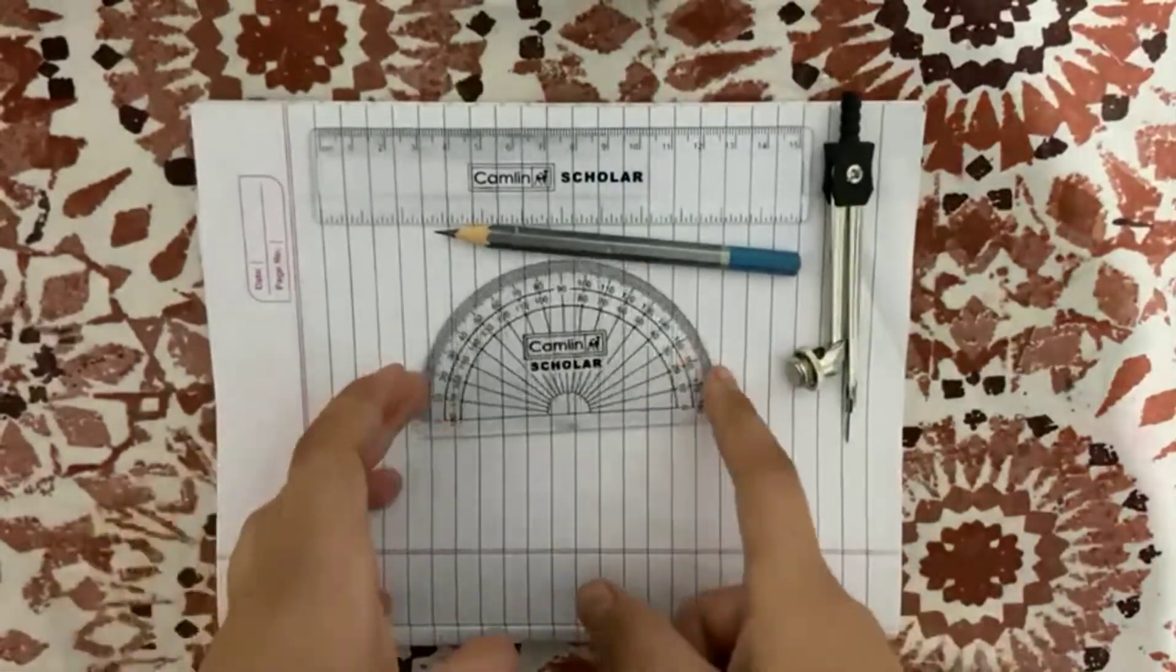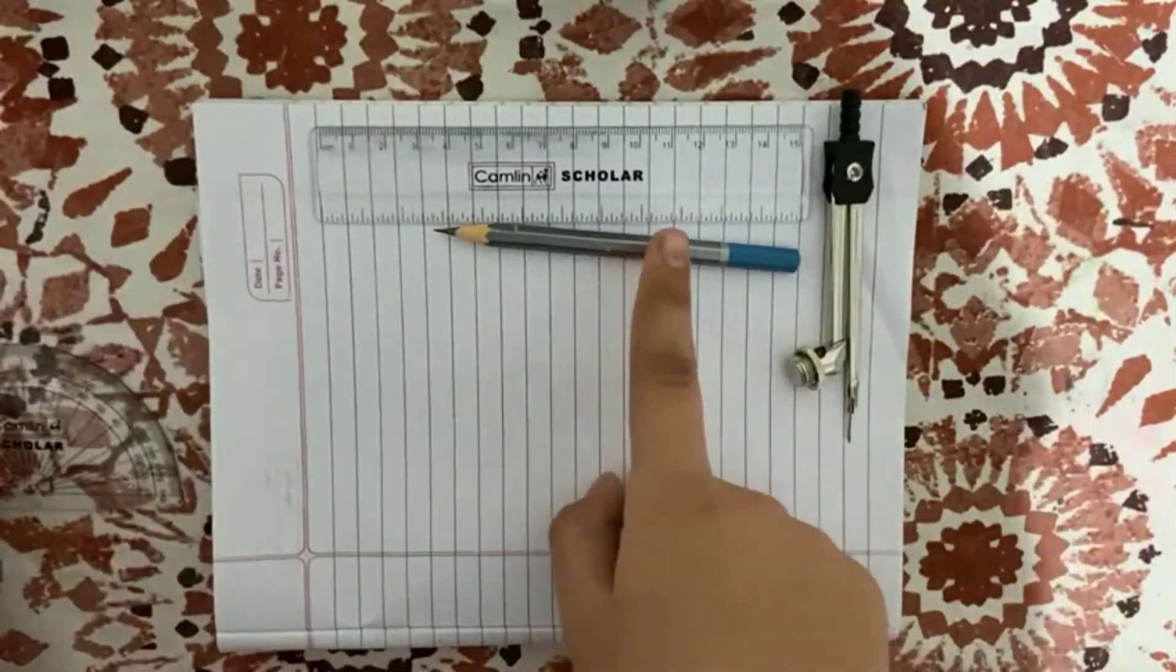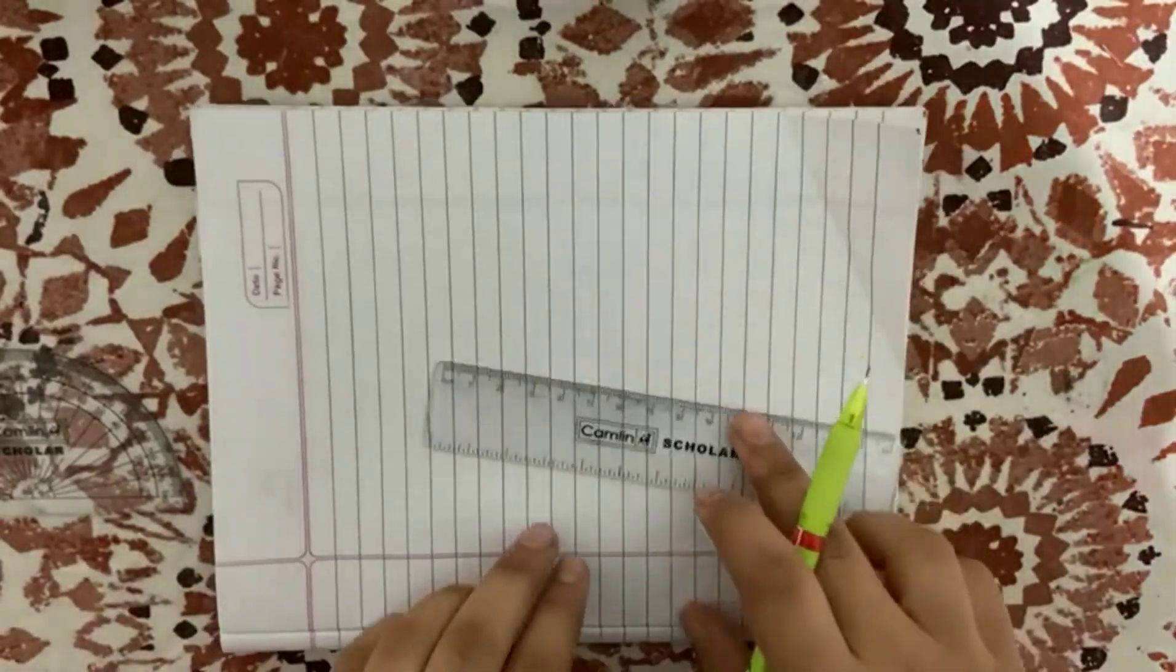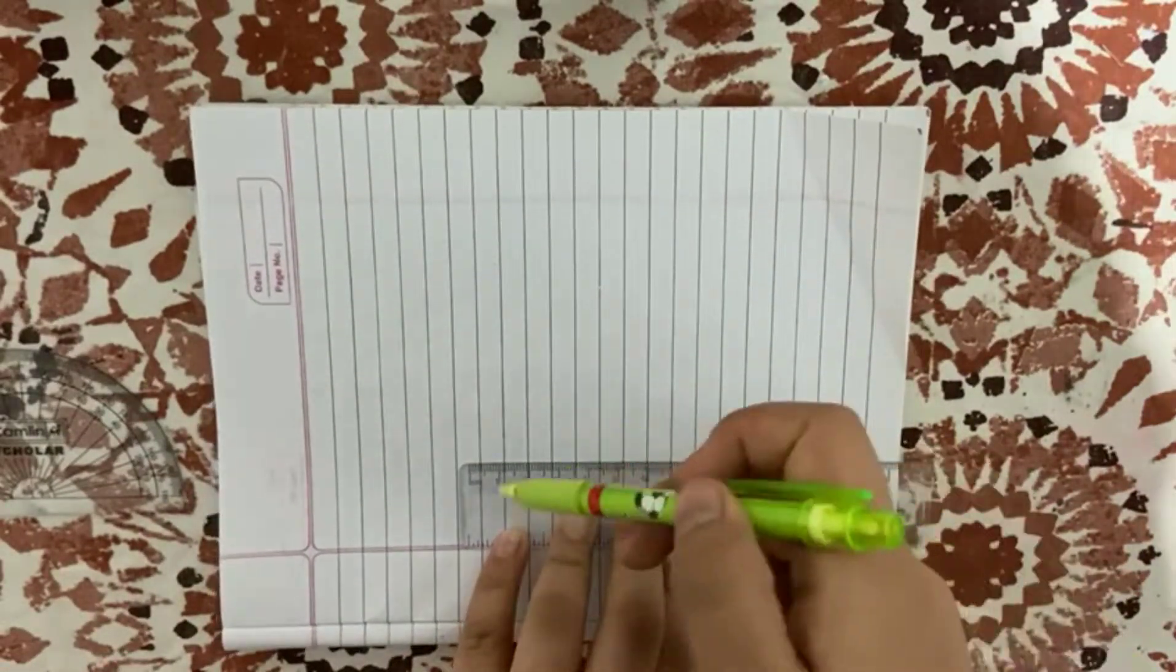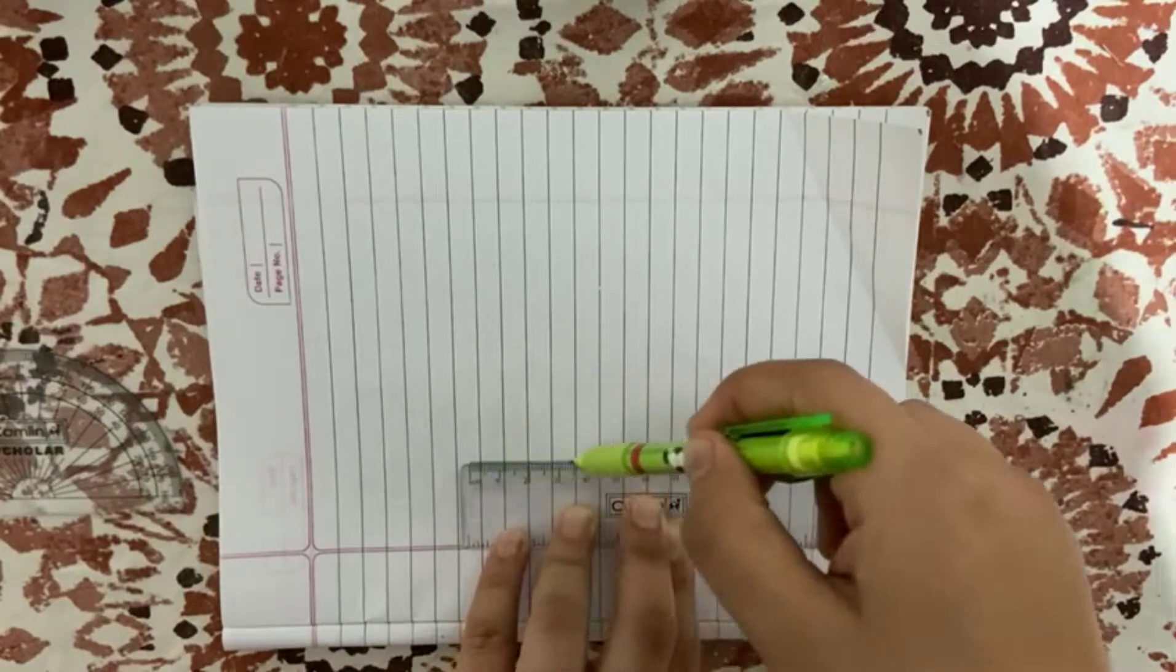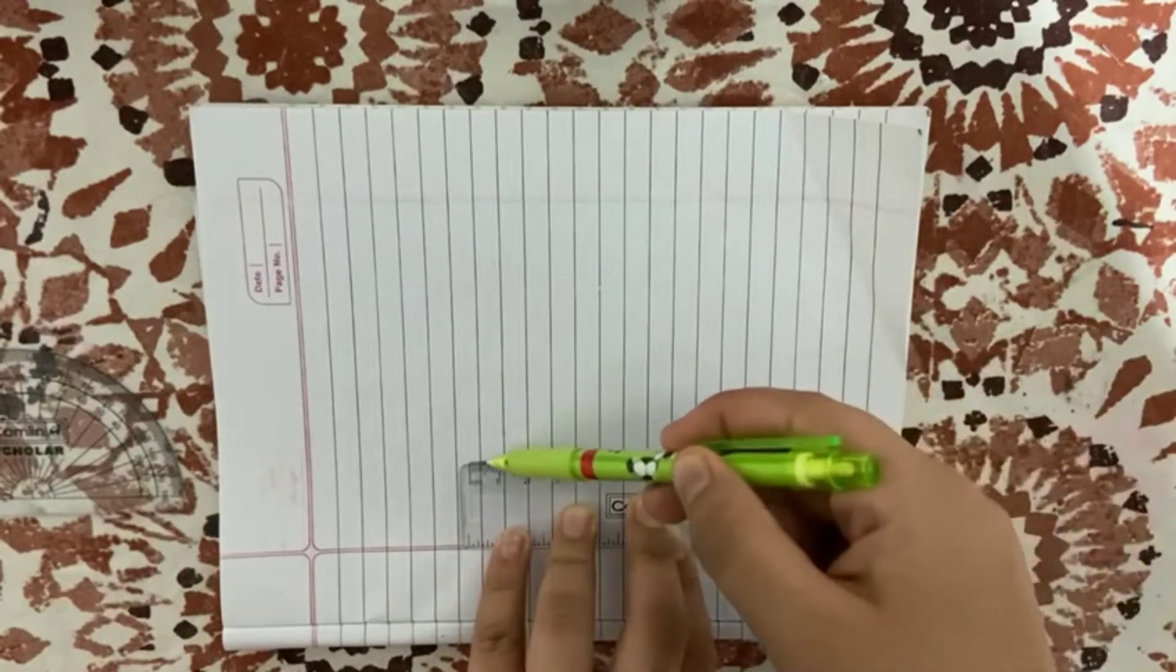So what we will do is put this pencil in the compass. The very first thing is that we will draw a line, a ray or a line.